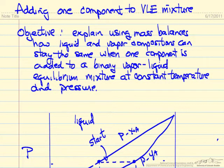This is a follow-up to the other video that discusses adding one component to a vapor-liquid mixture. The idea here is to explain using mass balances how the liquid and vapor compositions can stay the same when one component is added to a binary vapor-liquid equilibrium mixture at constant temperature and pressure.